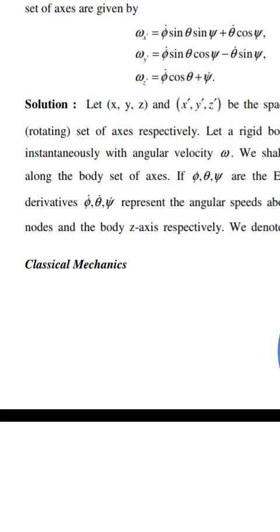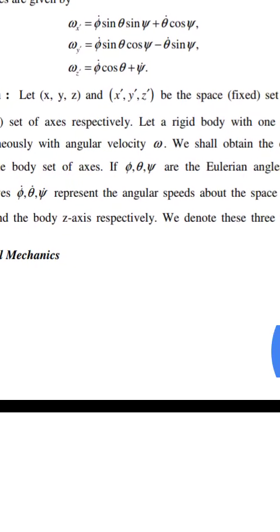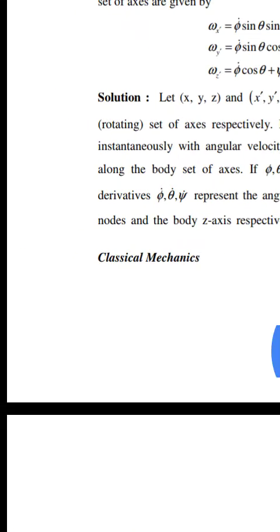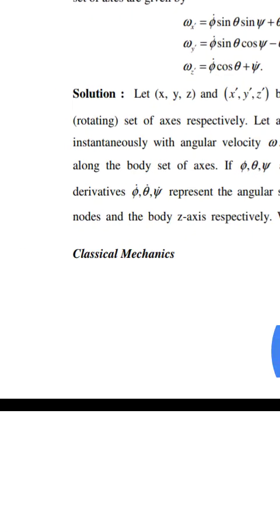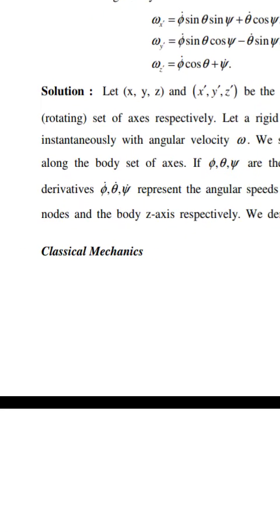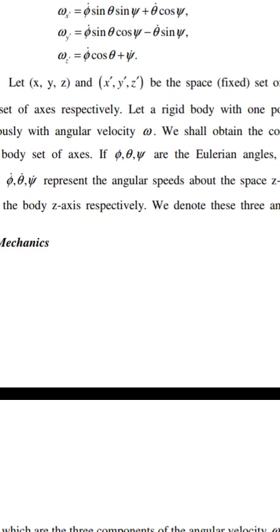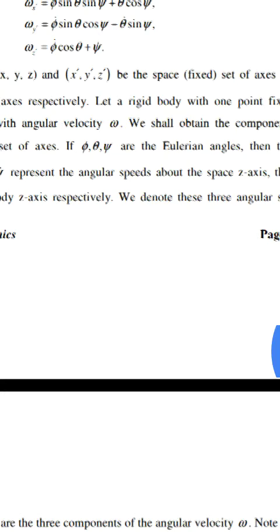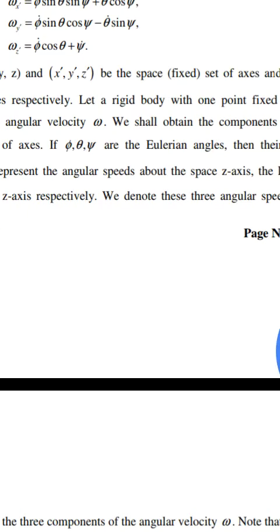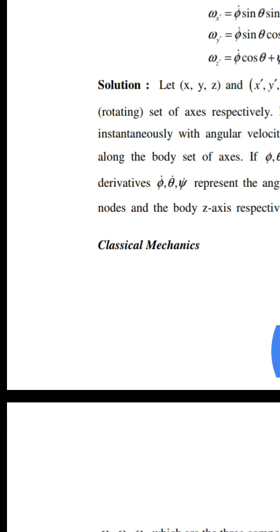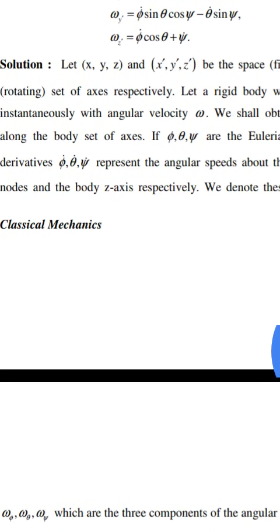If theta, phi, psi are the Eulerian angles, then their time derivatives — theta_dot, phi_dot, psi_dot — represent the angular speed about the space z-axis, the line of nodes, and the body z-axis respectively.